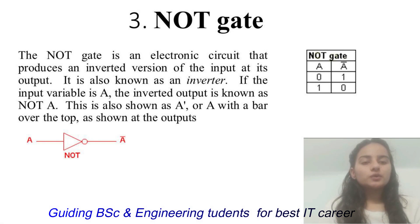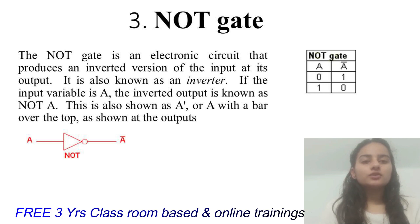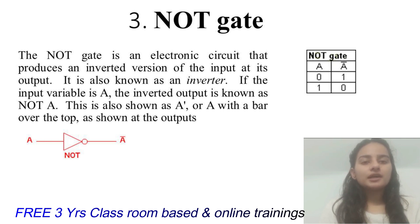NOT gate is slightly different. As I mentioned at the starting point, NOT gate has only one input. That is because NOT gate produces an inverted version of the input as its output — so this is the inverter. For example, if input is A, then its inverted output is NOT A, also written as A' or A-bar.